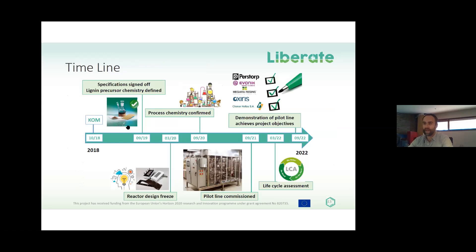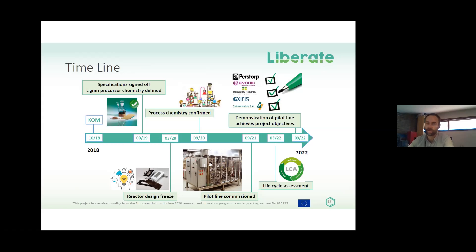This is the timeline of LIBERATE. We are now roughly between March 2020 and September 2020 — a critical point, because by September we must confirm the process chemistry. We then have one year to build and commission the pilot line by September 2021. The final year of the project is to demonstrate pilot line production and validate the compounds from the pilot line in different commercial applications for our end users: polyamide, polyester, antioxidant, phenol-formaldehyde resins, and so on.